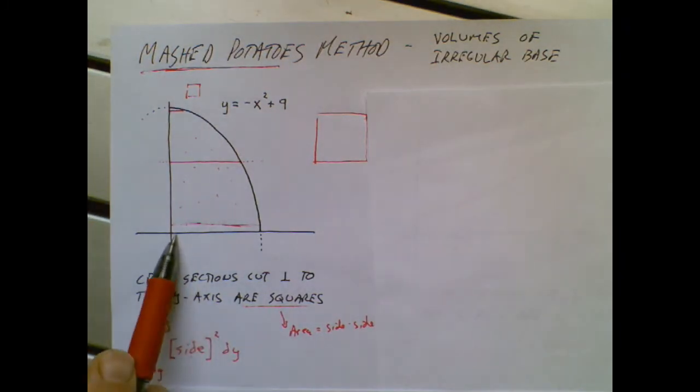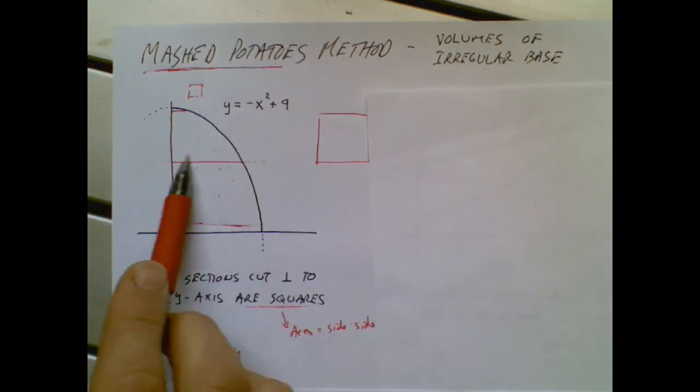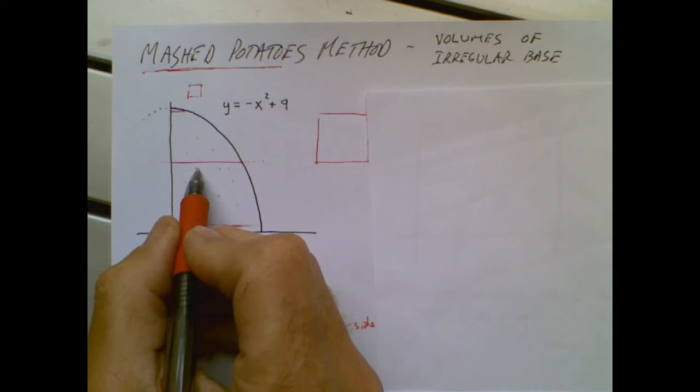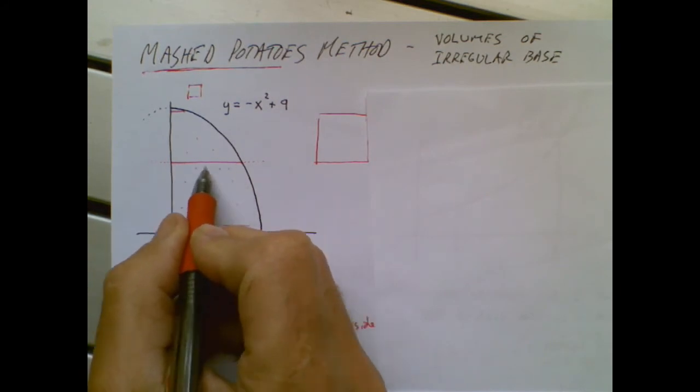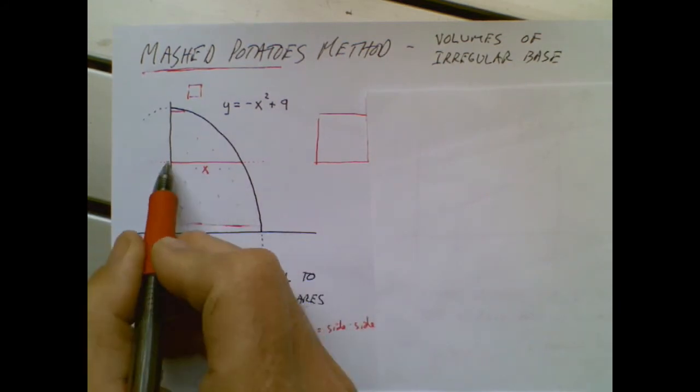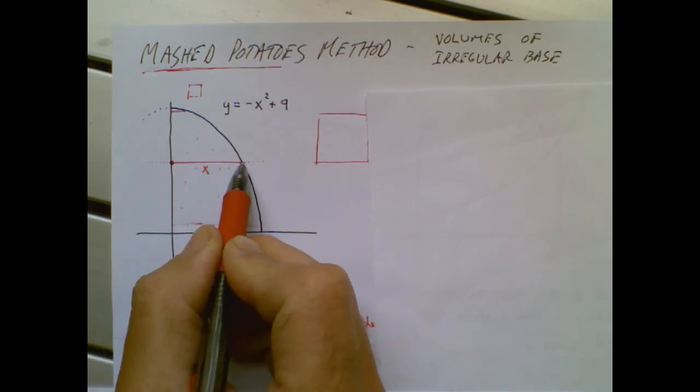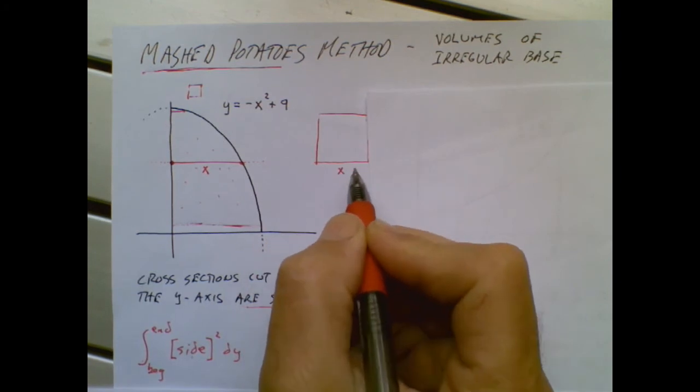They told us we're going to cut perpendicular to the y-axis. So I know I'm progressing along the y-axis. That's why that's a dy. And by the way, this distance, that's a pure x value, a purebred x value. It starts at the axis and goes over to the function. So that's an x.